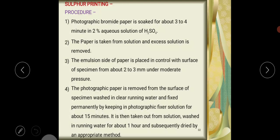Sulfur printing procedure: First, the photographic bromide paper is soaked for about three to four minutes in two percent aqueous solution of H2SO4, that is sulfuric acid. The paper is taken from solution and excess solution is removed.